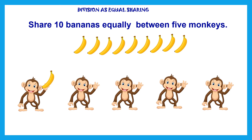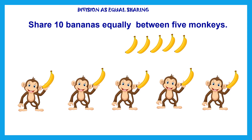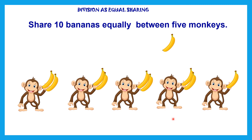The first banana goes to the first monkey, the next to the second monkey, to the third monkey, the fourth banana to the fourth monkey, the fifth banana to the fifth monkey. Then the sixth banana goes back to the first monkey, the seventh to the second monkey, the eighth to the third monkey, the ninth to the fourth monkey, and the tenth banana to the fifth monkey. Each monkey got two bananas.